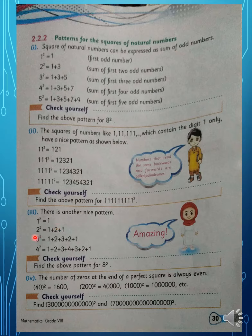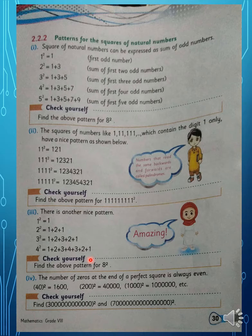Here is another nice pattern. 1 squared = 1. For 2 squared, you write 1 + 2, then reverse back to 1, giving 1 + 2 + 1 = 4. For 3 squared, write 1, 2, 3, then reverse: 1 + 2 + 3 + 2 + 1 = 9. For 4 squared, write numbers up to 4 then reverse. You can find the patterns for 5, 6, 7 in the same way.